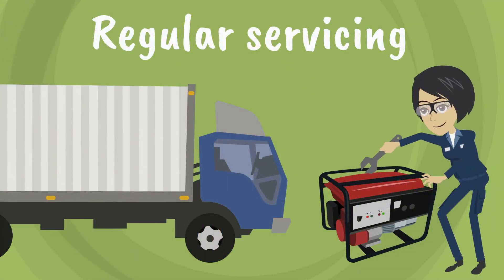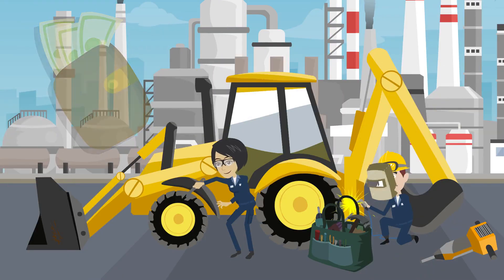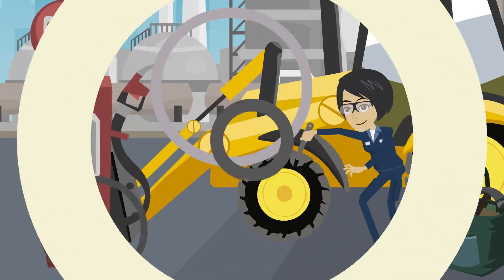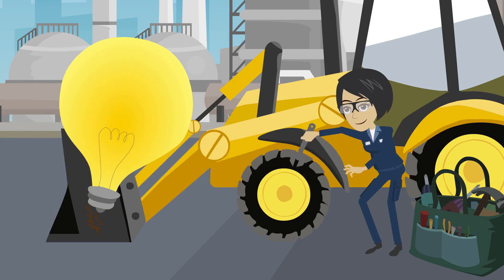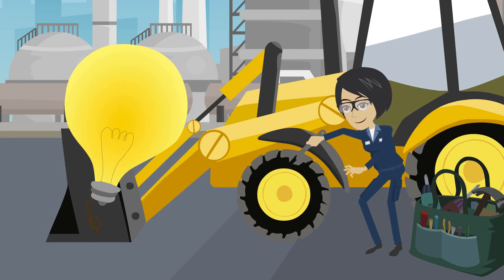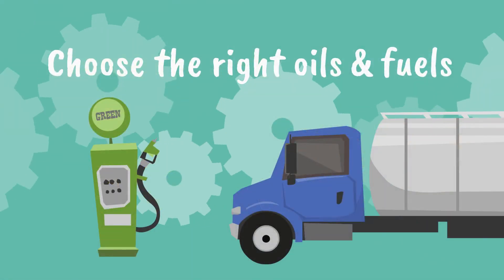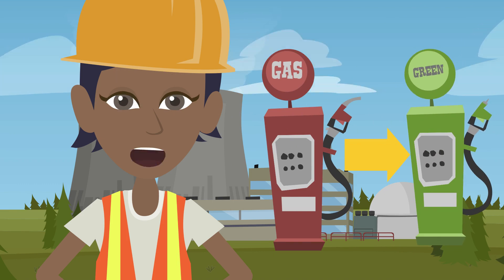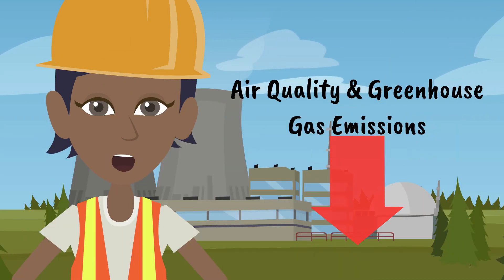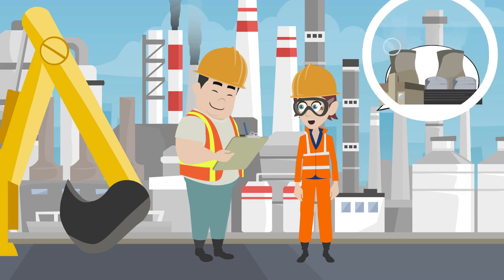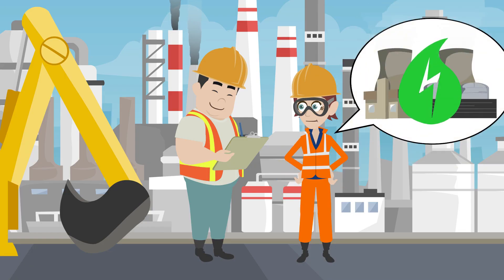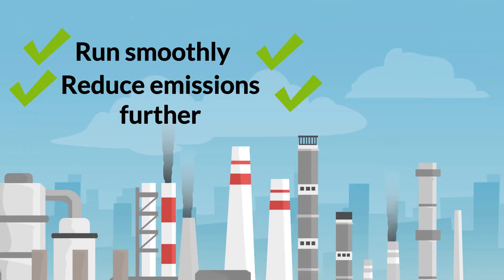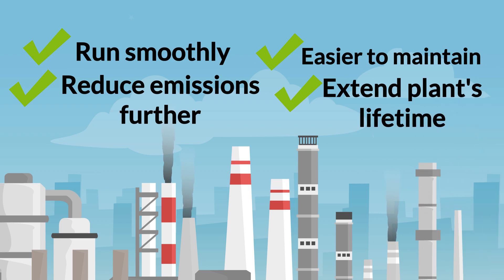Regular servicing, although sometimes overlooked due to downtime and extra costs, means equipment will perform better and last longer. Fuel will burn more cleanly, pollution control technologies will perform better, and you will get maximum power. You should also choose the right fuel and oils. There are alternatives to conventional diesel on the market, such as gas-to-liquid and hydrotreated vegetable oil, which offer reduced air quality and greenhouse gas emissions. Speak with your supplier to select the right oil for your plant's engine to reduce emissions and extend its lifetime.